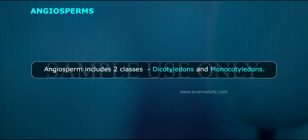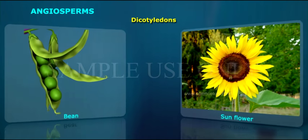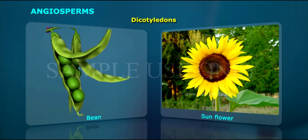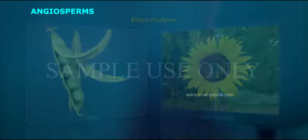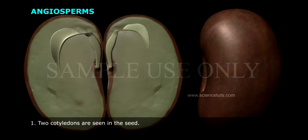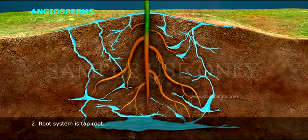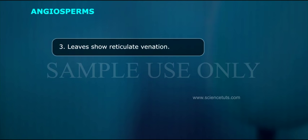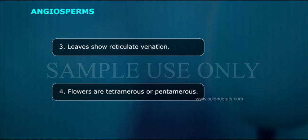Angiosperms include two classes: dicotyledons and monocotyledons. Dicotyledons — examples include bean and sunflower. Features: two cotyledons are seen in the seed; the root system is taproot; leaves show reticulate venation; flowers are tetramerous or pentamerous.